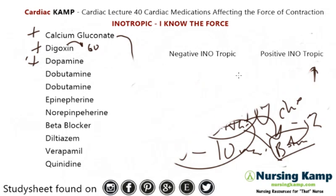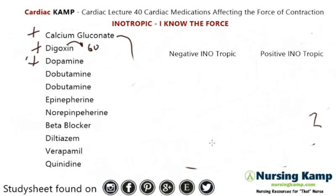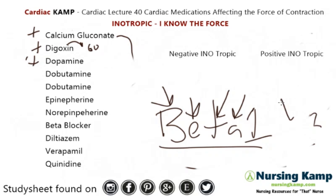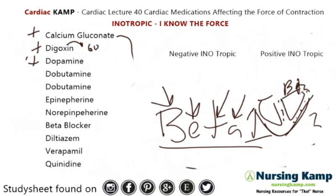The next is dobutamine. I call it 'dobetamine,' and it's mainly only beta — specifically only beta-1. It's a perfect inotropic medication for patients with cardiogenic shock because it really just works on the beta cells in the heart. What happens is that it pumps the heart. So dobutamine gently pumps the heart, and therefore it makes it a positive inotropic.